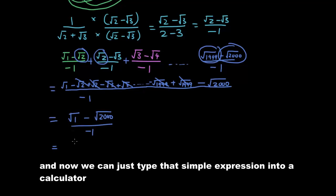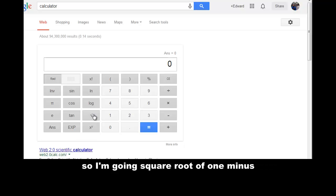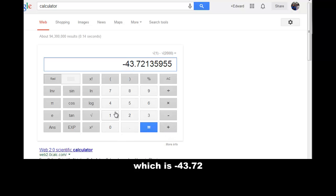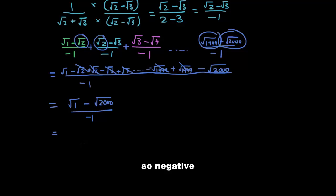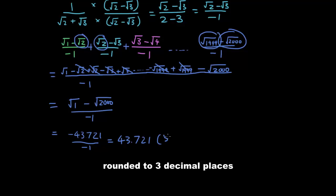Now we can just type that simple expression into the calculator: square root of 1 minus square root of 2000, which is negative 43.721. So negative 43.721 over negative 1 gives us 43.721. Round it to 3 decimal places: the answer is 43.721.